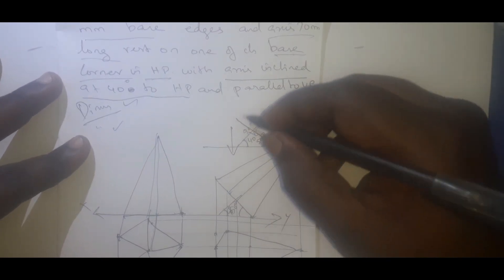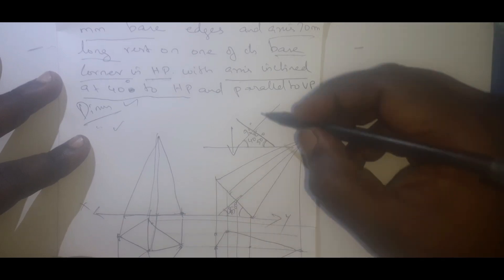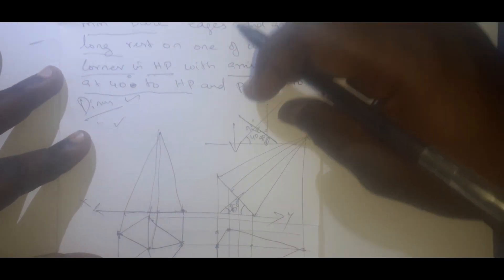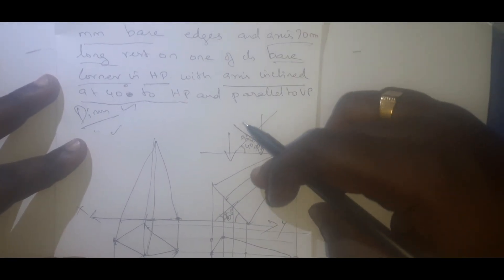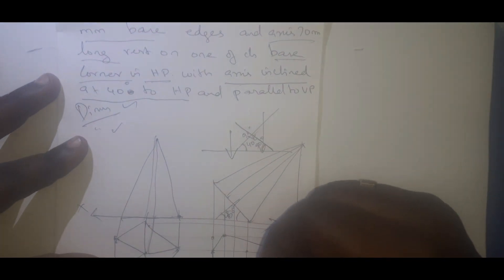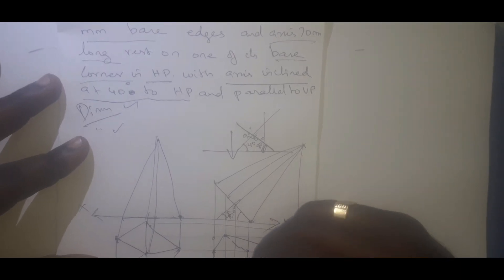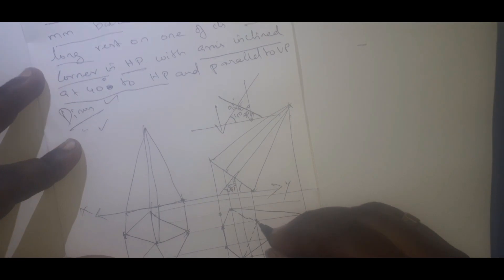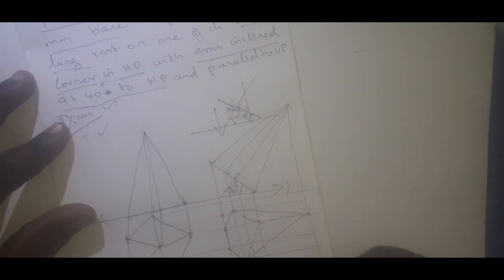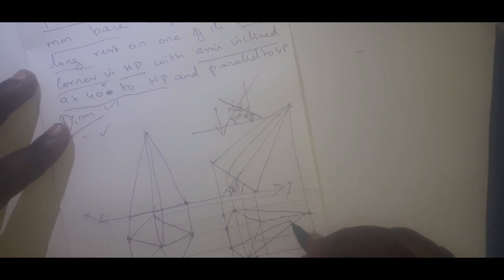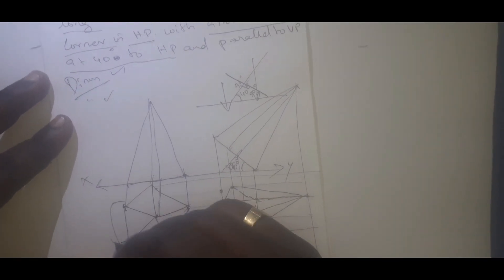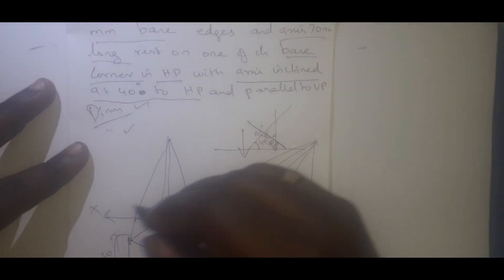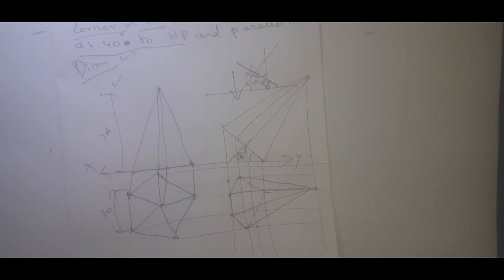While seeing from the top — just imagine this as an oil barrel. While seeing from this side, can we see the bottom? No. So we cannot see the bottom, which means we just draw a dotted line. The visible parts we draw as continuous lines. So this is the way of solving it. The dimensions: 30mm for the base and 70mm for the axis height. Understanding is very, very important.